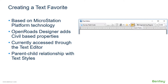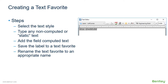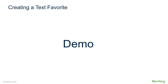To create annotations, the first thing we have to learn is how to create text favorites. Text favorites are based on MicroStation platform technology; OpenRoads Designer adds civil-based properties to those text favorites. They're accessed through the text editor and have parent-child relationships with MicroStation text styles. The Insert Field option provides access to computable text — for example, a computation of a station or offset of a point along an alignment. The OpenRoads categories provide options for civil-based computations. Steps involved: select a text style in the text editor, type static text, add the field computed text, save to a text favorite, and rename it appropriately.